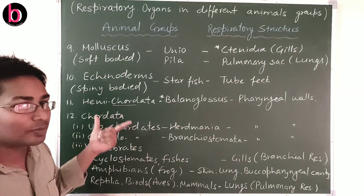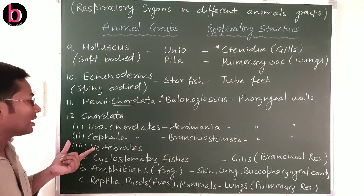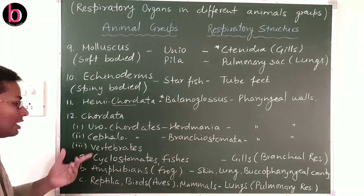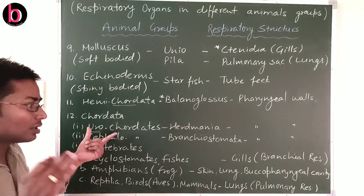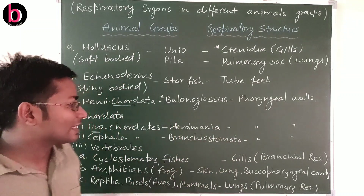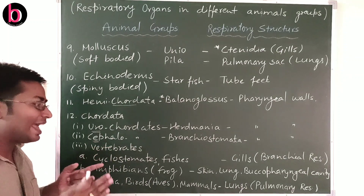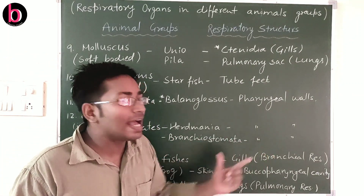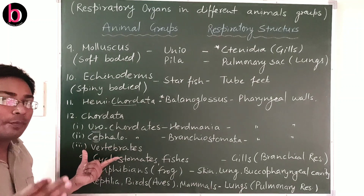The last and most advanced phylum is Chordata. Urochordates have notochord only in their tail region — 'uro' means tail — and example is Herdmania; they use pharyngeal walls for respiration. Cephalochordates have notochord from head to tail — 'cephalo' means head — example is Branchiostoma; they also use pharyngeal walls for respiration.